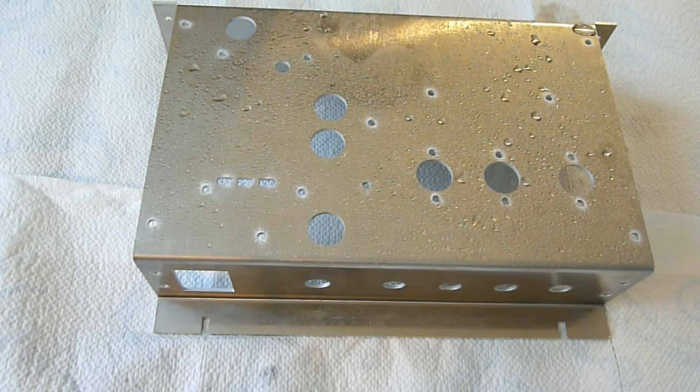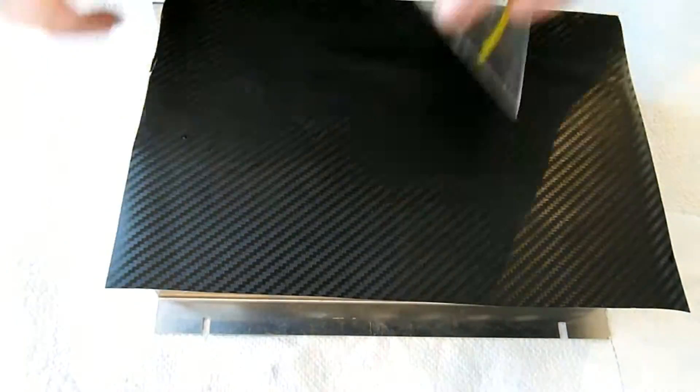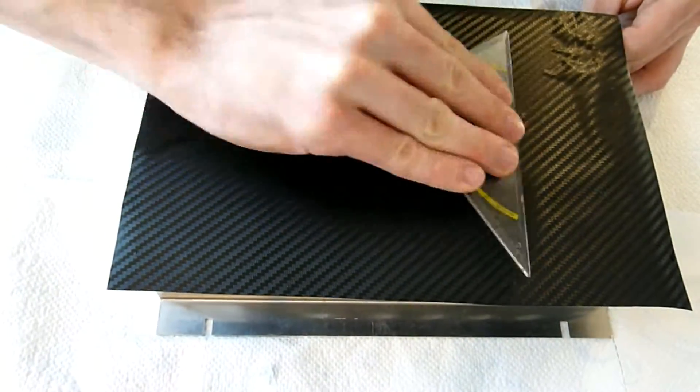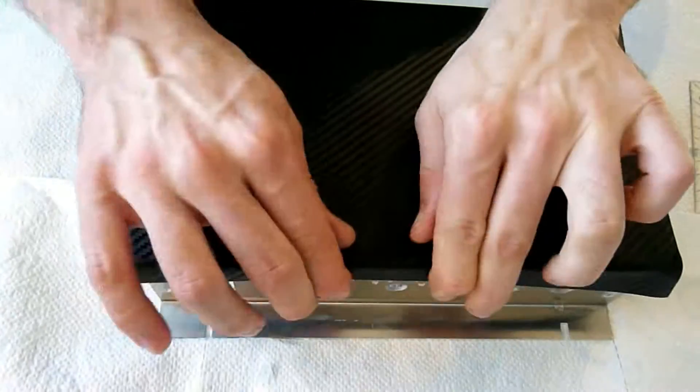This is the chassis where all our components will sit in. I wanted it to look a bit better so I had some carbon vinyl around. I thought this would give a nice touch.